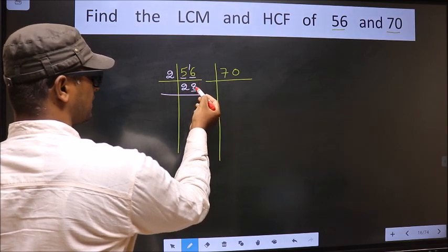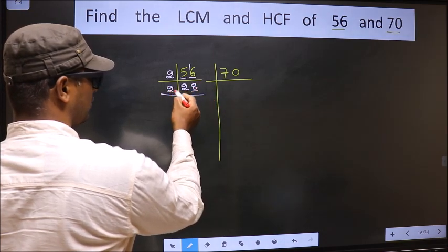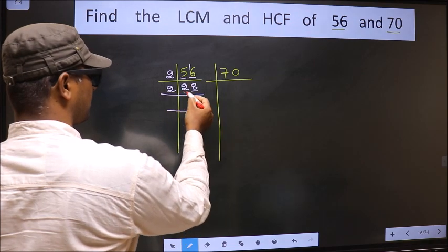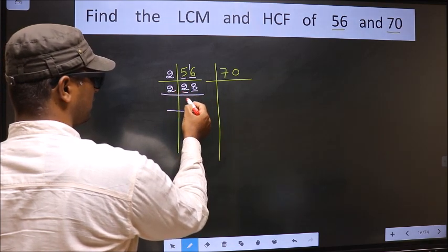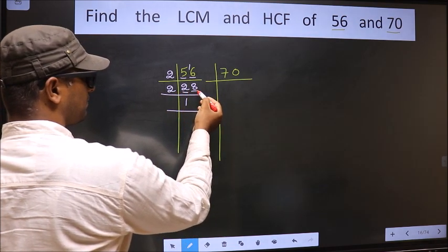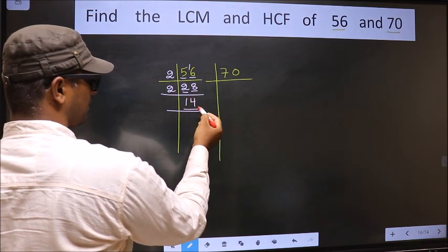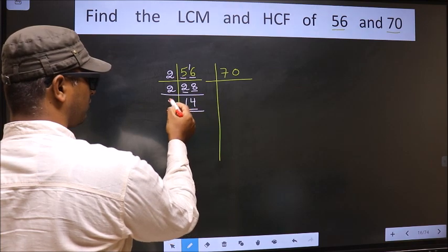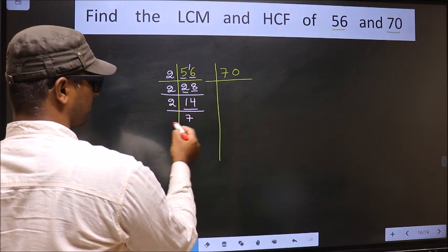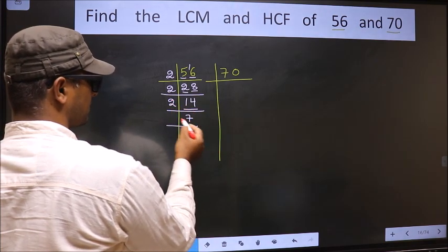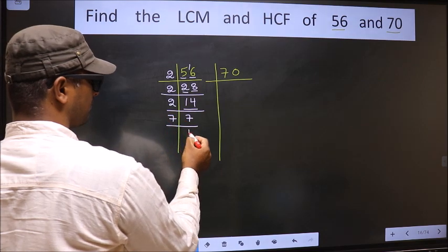Now here, last digit 8, even, so we take 2. The first number 2, when do we get 2 in the 2 table? 2 times 1 is 2. The other number 8, when do we get 8 in the 2 table? 2 times 4 is 8. Now here we got 14. 14 is 2 times 7. Now we have 7. 7 is a prime number, so 7 times 1 is 7.